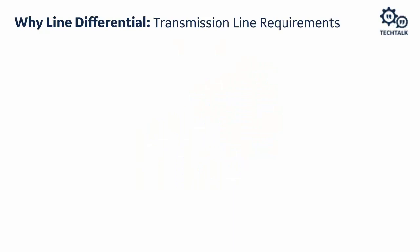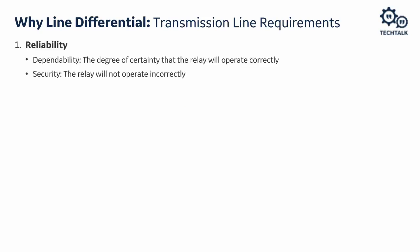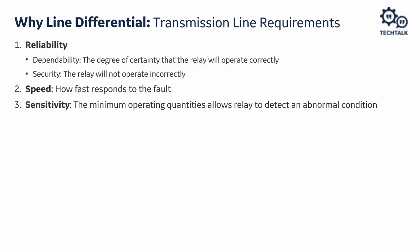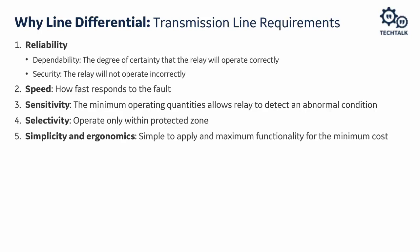Many people ask why we are evaluating line differential instead of distance. Looking at requirements for line protection: first, protection has to be reliable — dependable and secure. Second, we want protection to be fast, clearing faults as quickly as possible. We also need sensitivity — the minimum operating quantity, especially important for high-resistive faults. We want selectivity, operating only within the protection zone. And we want simplicity — maximum functionality for minimum cost.